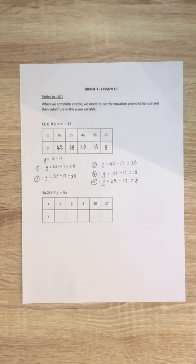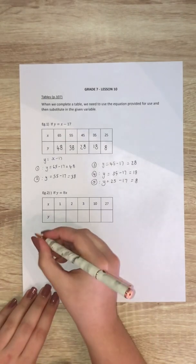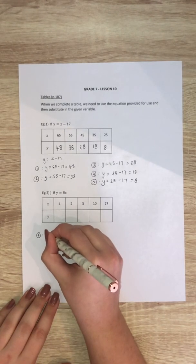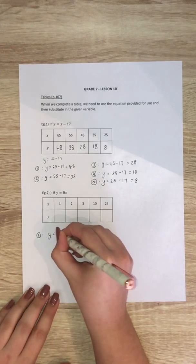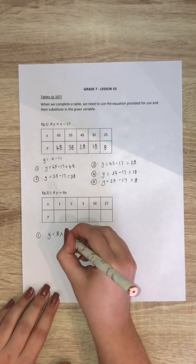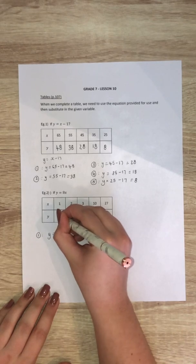Now the second one works exactly the same. The formula given to us is y equals 8x. Now 8x means 8 times x, so whatever the value of the x is you're just going to times it by 8. So the first one y equals 8 times 1, which is just 8.